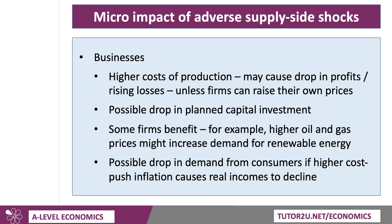In terms of the micro-impact — thinking synoptically — if you have an adverse supply shock, businesses face higher costs of production. You can probably visualize that using a cost-and-revenue curve diagram, which could lead to a fall in profits, potentially losses. Some firms can raise their own prices. If profits are falling because of higher costs, firms may decide to cut back on planned investment, and that would be negative for them.